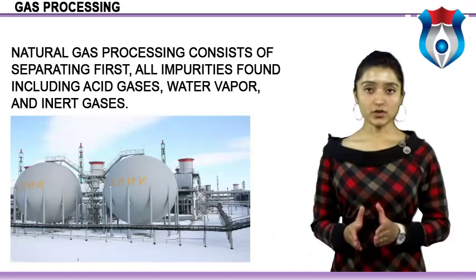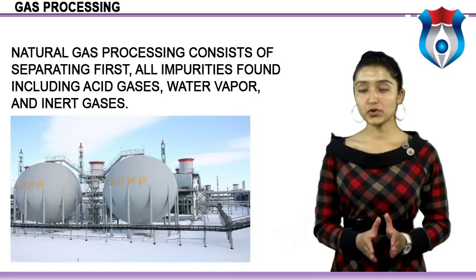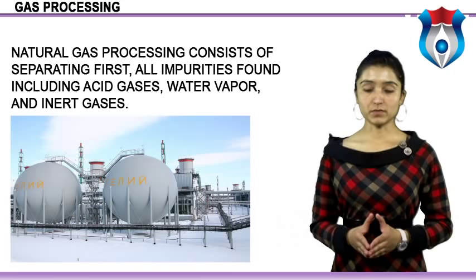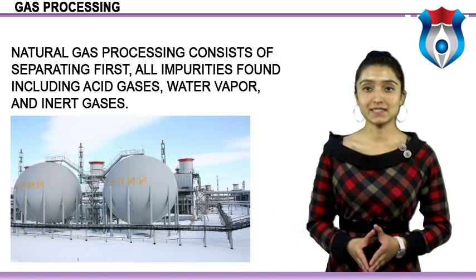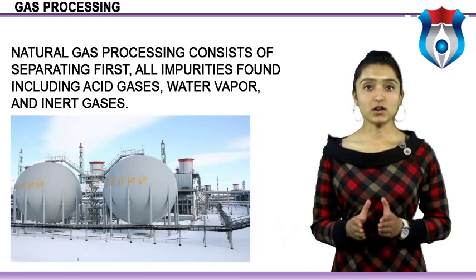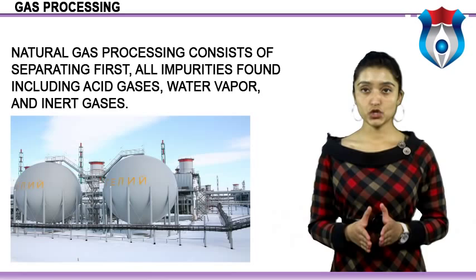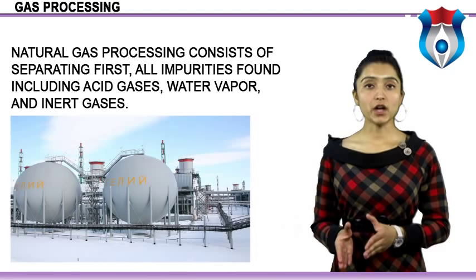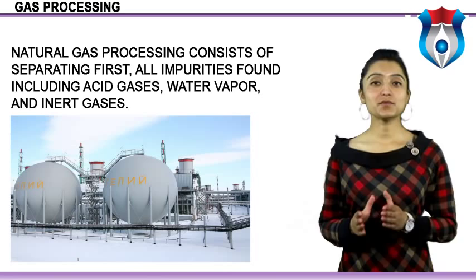Natural gas processing consists of separating all impurities found, including acid gases, water vapor, and inert gases. This stage is called gas treatment. Sweetening of sour natural gas is the initial purification step, which takes care of the removal of acid gases H2S and CO2 — amine treatment, physical methods, and others are discussed. Gas dehydration is carried out next using glycols, TEG, or solid desiccants.